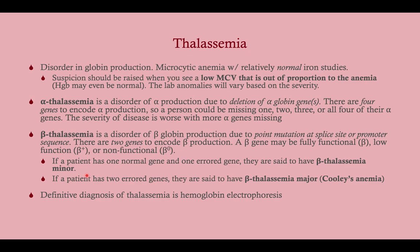Thalassemias are disorders of globin production, so you'll have a microcytic anemia with fairly normal iron studies because the problem is not in the iron — unlike iron deficiency or anemia of chronic disease. Suspicion should be raised when you see a low MCV that's out of proportion to the anemia.